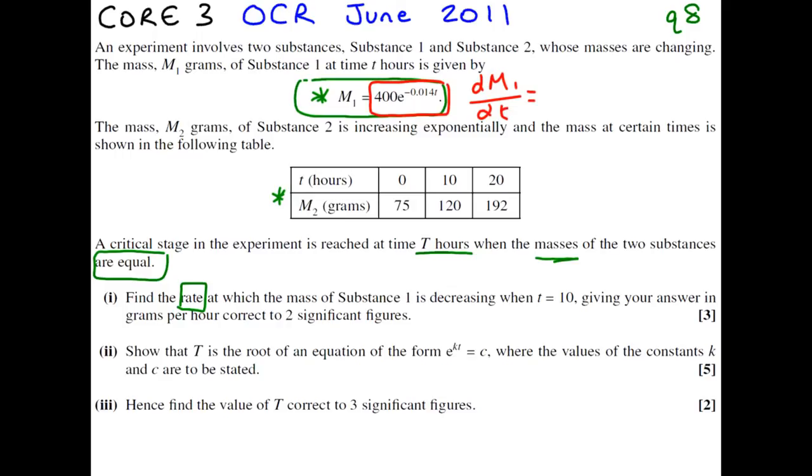When you differentiate an exponential, you get the same thing again, e to the minus 0.014t. However, we have to use the chain rule and times by the differential of the function inside, the function in the power. We do 400 times minus 0.014, and we get minus 28 over 5.